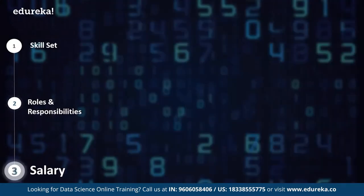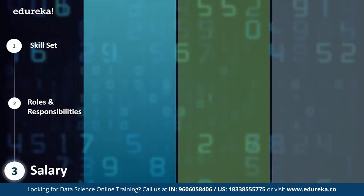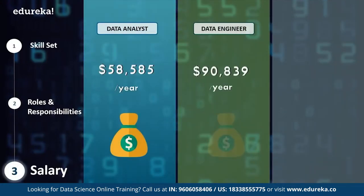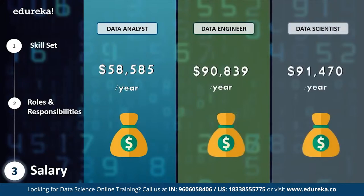Now let's look at how much you can earn in a career in data analytics, data engineering, or data science. The typical salary of a data analyst is just under $59,000 per year, whereas a data engineer can earn up to $90,839 per year, and a data scientist can earn up to $91,470 per year. While the figures for data engineer and data scientist may not seem very different at first, delving deeper into the numbers, a data scientist can earn 20 to 30% more than an average data engineer.